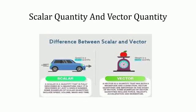A quantity that can be completely expressed by its magnitude alone is called a scalar quantity. Direction is not used in scalar quantity. Time, length, breadth, area, mass, temperature, density, and work are some scalar quantities. For example, if a person asks what is the time, you will say 5 p.m. The information regarding time is ample enough for the person to understand it is 5 o'clock in the evening.